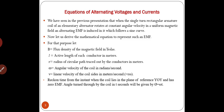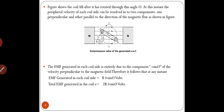When the coil is in the reference plane YOY', it has zero EMF — if the coil is moving parallel to the magnetic flux from north pole to south pole, zero EMF is induced. But if it rotates at an angle, that angle is called θ = ωt. The figure shows coil AB after it has rotated through angle θ, and the peripheral velocity of each coil side can be resolved into two components: one perpendicular and one parallel to the direction of magnetic flux.